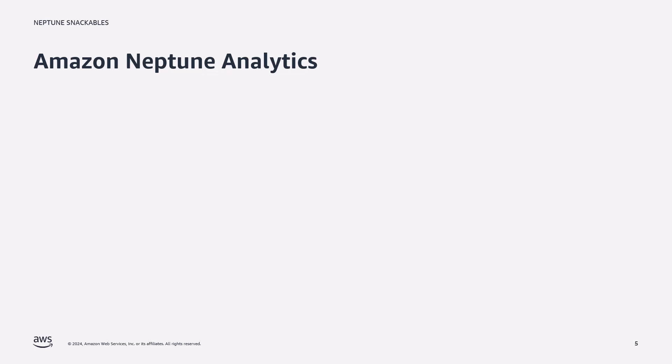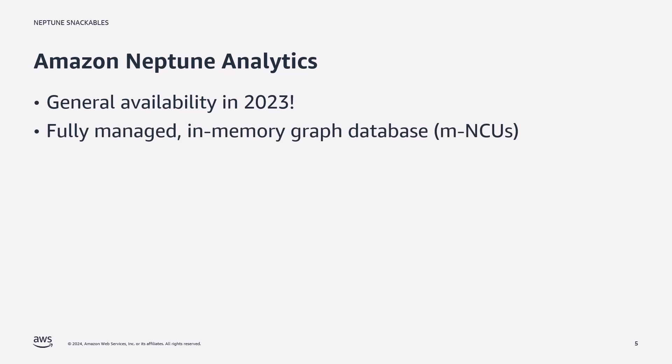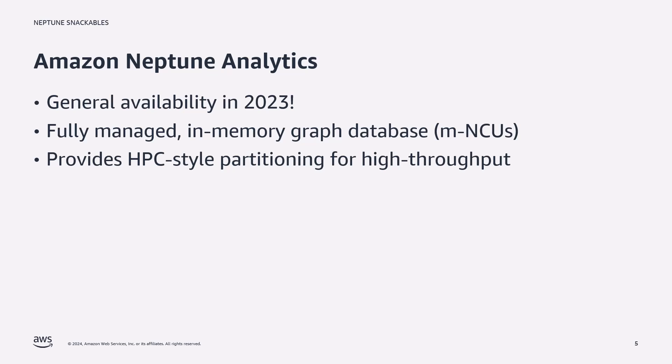Now on to Neptune Analytics. It went on general availability at reInvent in 2023 and we've already seen significant take-up with customers. It is a fully managed in-memory graph database service with no instances to manage. You simply select the number of MNCUs — memory optimized Neptune capacity units — ranging from 128 to 4096. One MNCU is equal to 1 GB of memory and proportional compute and networking. The configuration will depend on how much of your graph you want to store in memory.